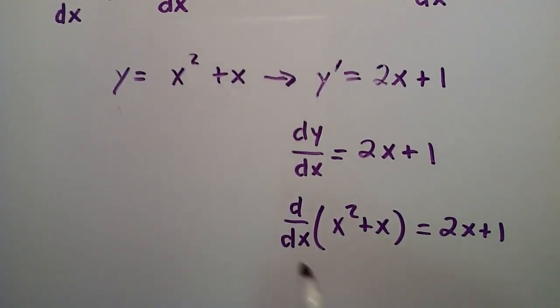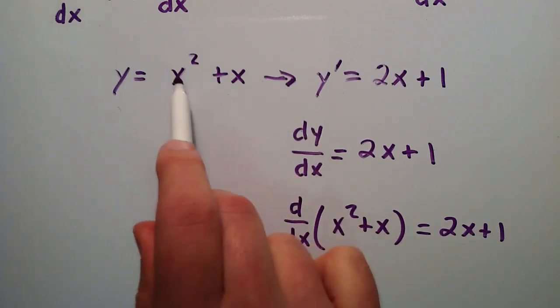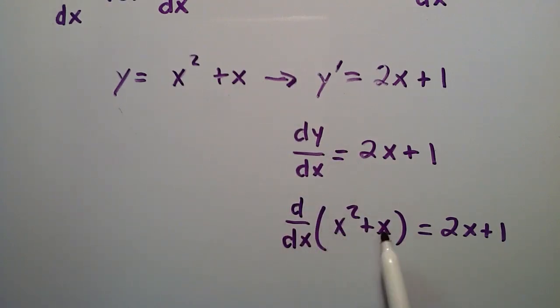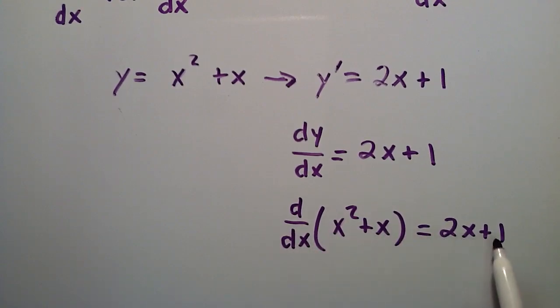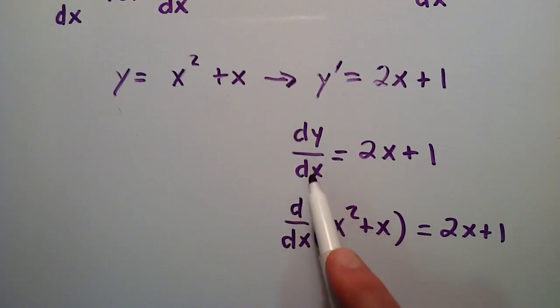So basically, the big difference between these two notations is this one is saying what the function we're taking the derivative of. We're taking it of y, and y equals x squared plus x. You could also write it this way. And instead of writing the variable y here, you just simply write what y is equal to. So d over dx of all this stuff is equal to 2x plus 1, and all this stuff is equal to y. So there's your y right there. And taking the derivative of the function y with respect to x gives you 2x plus 1.